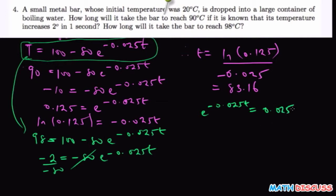You can confirm this, and then to find t we take the natural logarithm of both sides: negative 0.025t equals the natural logarithm of 0.025.